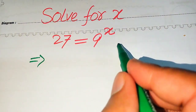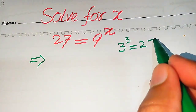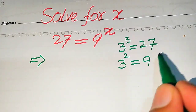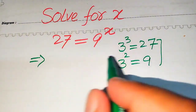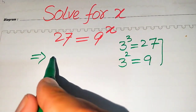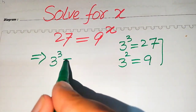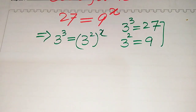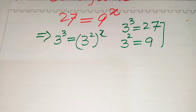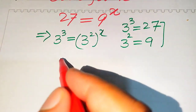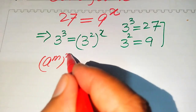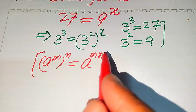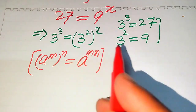We know that the prime factors of 27 are 3 cubed, and the prime factors of 9 are 3 squared. So we replace these two values on both sides of this equation: we write 27 as 3 cubed, and we write 9 as 3 squared with its whole power being x. In the next step we apply another exponential law: a to the power of m to the power of n equals a to the power of m multiplied by n, and we use this on the right hand side.